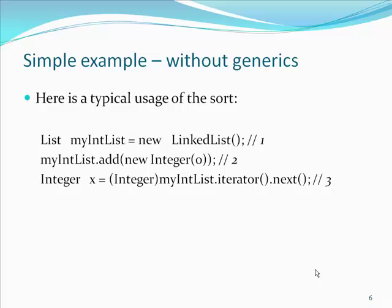Defining Simple Generics. Here is a simple example without generics. The cast on line 3 is slightly annoying. Typically, the programmer knows what kind of data has been placed into a particular list. However, the cast is essential — the compiler can only guarantee that an object will be returned by the iterator. To ensure the assignment to a variable of type integer is safe, the cast is required. Of course, the cast not only introduces clutter, it also introduces the possibility of a runtime error, since the programmer might be mistaken.